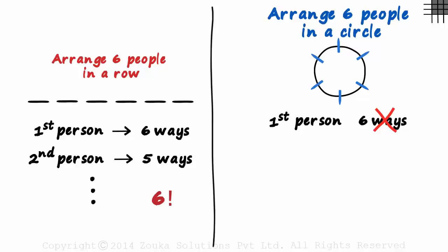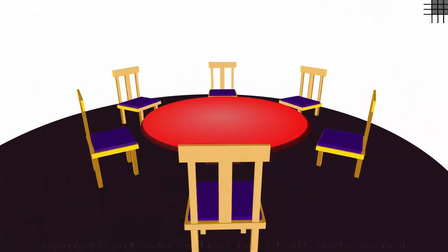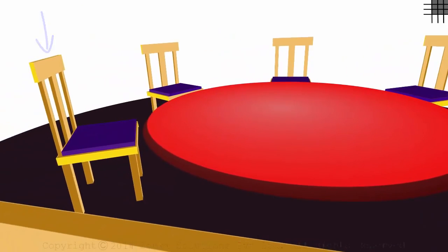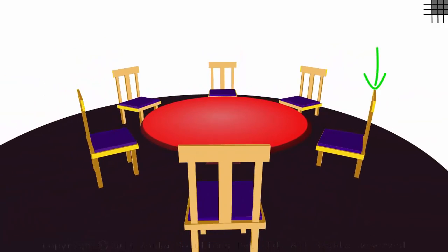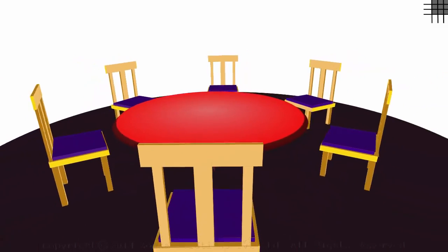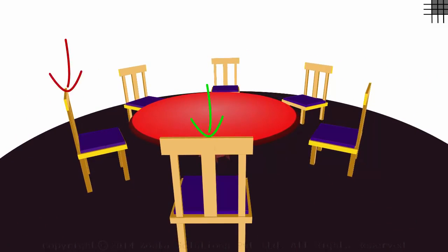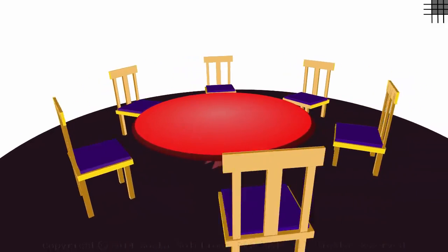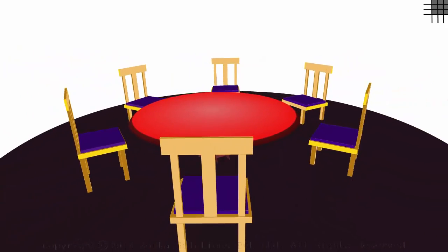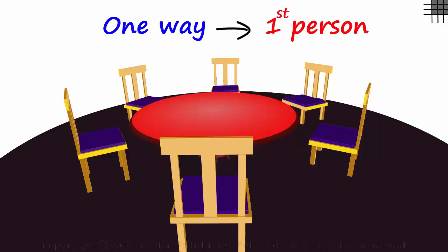No, it's not correct. The first person that comes to the table cannot be seated in six different ways. To understand this, look at a circular table with six chairs. Assume you are the first person and you sit on one chair — you see three chairs in front, one on your left and one on your right. Now assume you sit on a different chair — you still see three chairs in front, one on your left and one on your right. It's the same view. Say you sit on a third chair — the view is still the same: three in front, one on your left, one on your right. This tells us there is just one way in which the first person can be seated on any of the six chairs.